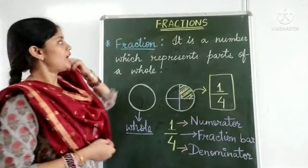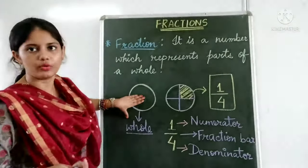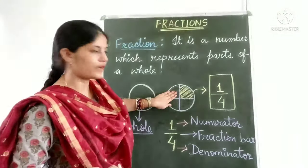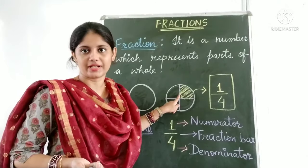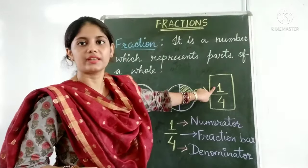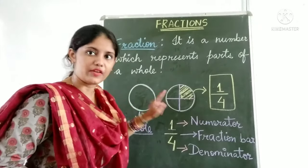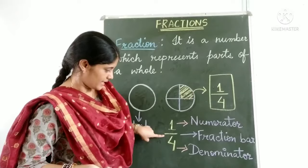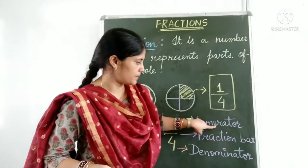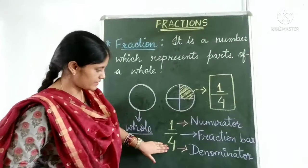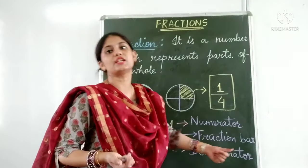So what have we studied in this video? A fraction is a number which represents part or parts of a whole. Here we have a whole — a complete circle. In the next figure, I divided this circle into four parts and shaded one part. The fraction of the shaded portion is one by four. Every fraction is written using two numbers separated by a division bar or fraction bar. The number on top is called the numerator, and the number written below is called the denominator.